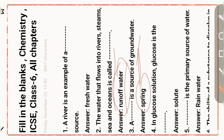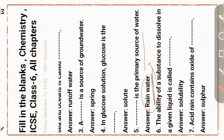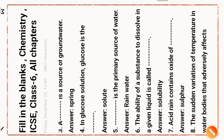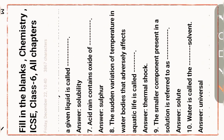Next question: in glucose solution, glucose is the solute and water is the solvent. Next question: rain water is the primary source of water. Next question: the ability of a substance to dissolve in a given liquid is called solubility. Next question: acid rain contains oxides of sulfur.